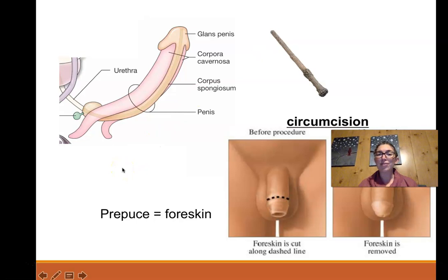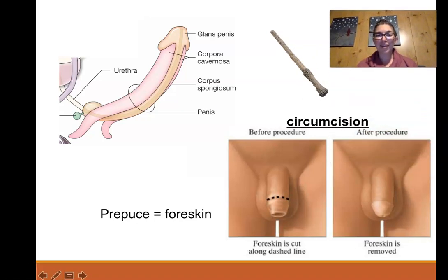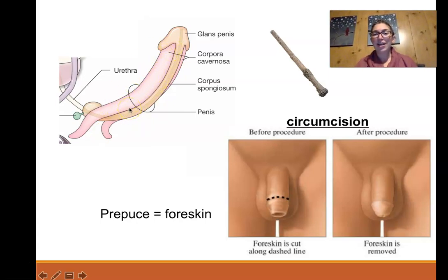The penis does not have a bone — there's no baculum in a human penis. But there is erectile tissue. The two types are the corpora cavernosa on the lateral sides, and the corpus spongiosum on the ventral side. They swell and become engorged with excessive blood flow. Erection through vasodilation and engorgement of blood causing tissue dilation is kind of magical — more magical than a bone.